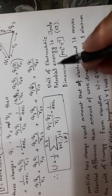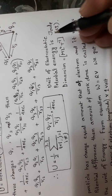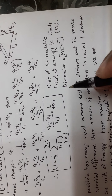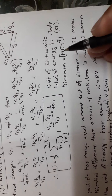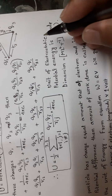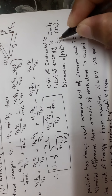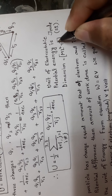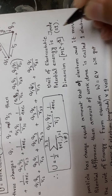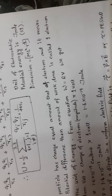Electrostatic potential energy has units of energy. The dimension is simply the energy dimension: ML squared T to the power minus 2.